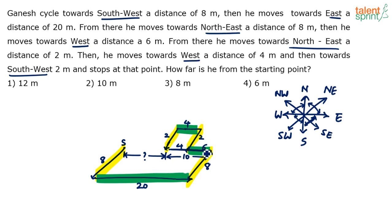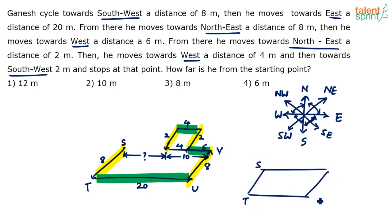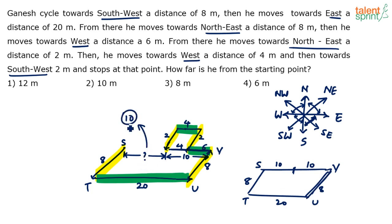Since these two yellow-highlighted lines are also parallel, and the 10-meter and 20-meter lines are parallel, this forms a parallelogram — let's call it S, T, U, V. In a parallelogram opposite sides are equal: this side is 8, that side is 8, this side is 10. So the question-mark distance must also equal 10 meters, which is option 2.